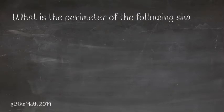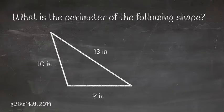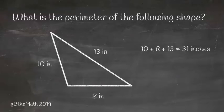What is the perimeter of this shape? We have a triangle with side lengths of 10, 8, and 13 inches. Adding them all up, we end up with 31 inches.